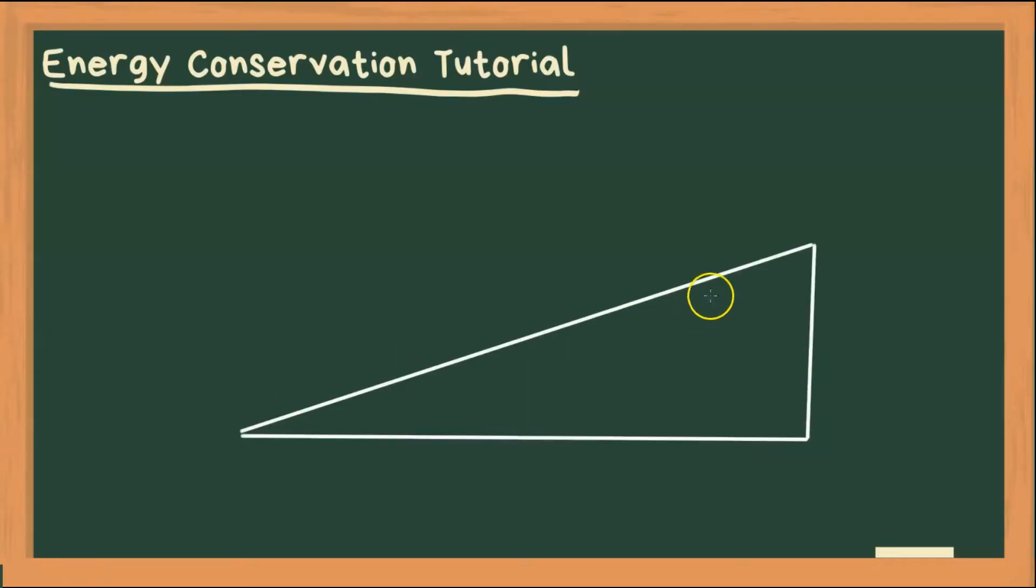Alright, so let's start with something like a ramp. Now I'm going to say it has some kinetic energy, let's say for example 8 joules.